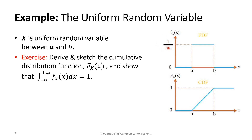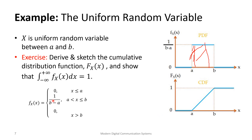The scale factor is one over b minus a. To sketch the CDF, it's the integral of the PDF, so it's the accumulated area as you move the line. As we move to the right the area increases in a linear fashion, because the integration of a constant is a line. It starts at zero at a and becomes one at b. Mathematically, the PDF equals zero for x less than a, zero for x greater than b, and one over b minus a for values between a and b.